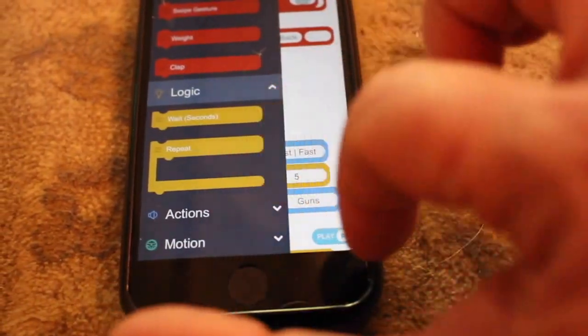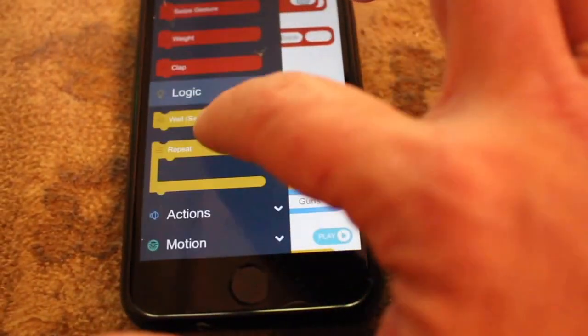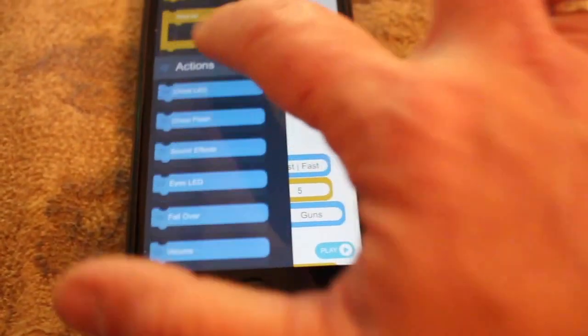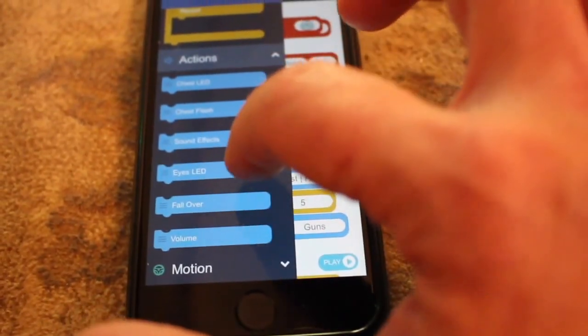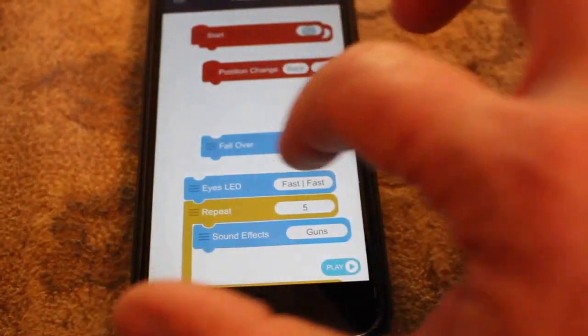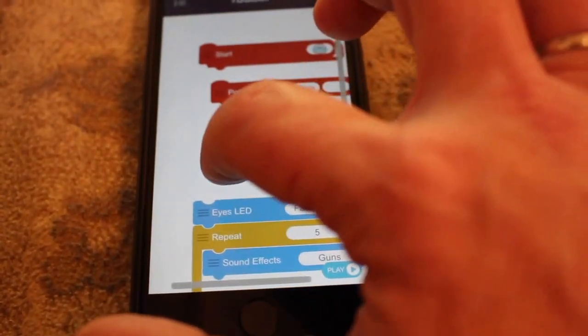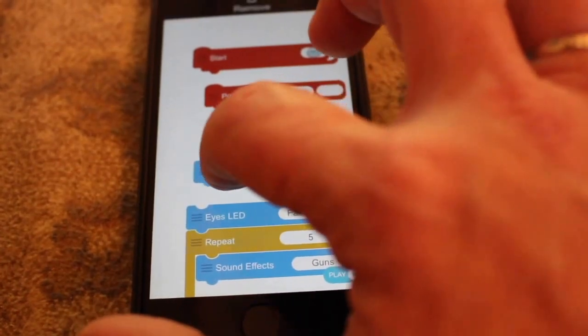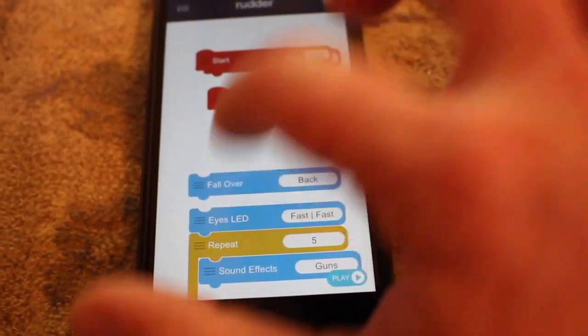And if I would like him to perform other actions like have his chest flash or do sound effects or even fall over, I just have to drag and drop. That's how kids learn how you can give a sequence of actions and your robot will perform them.